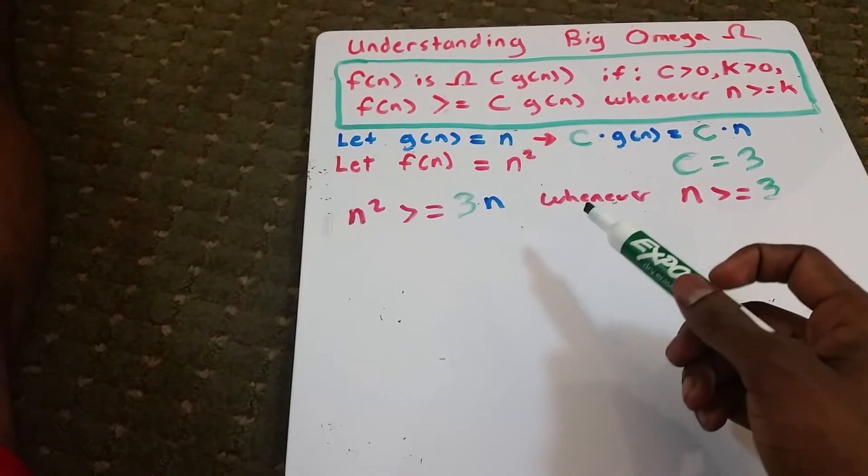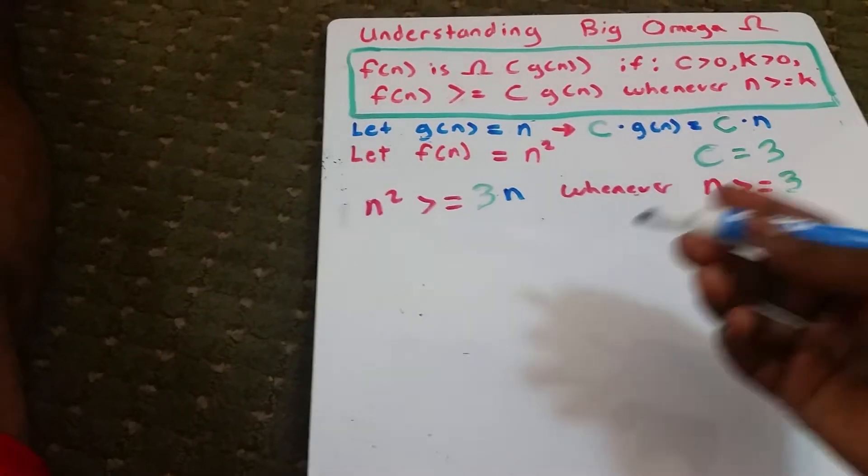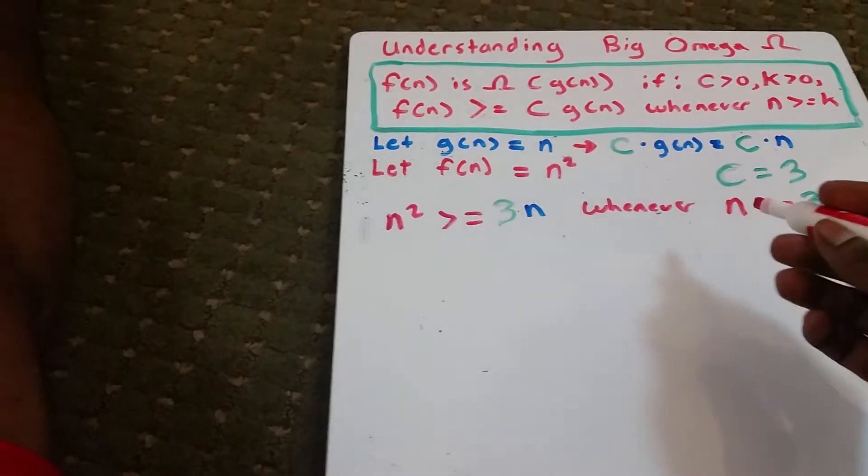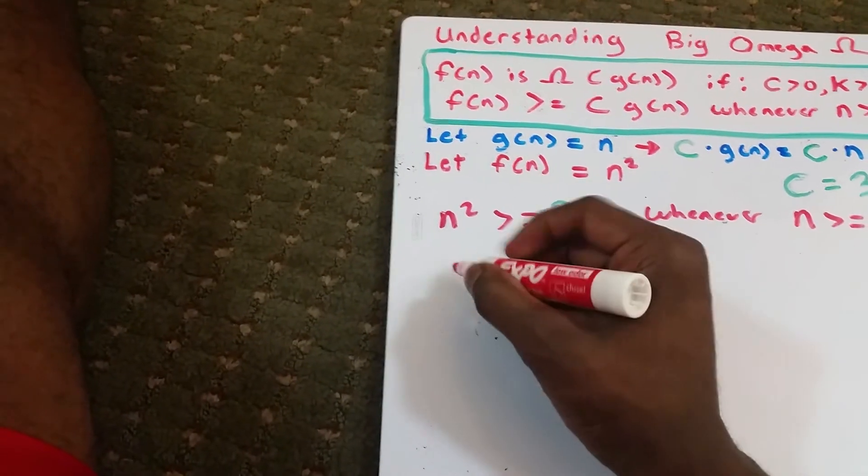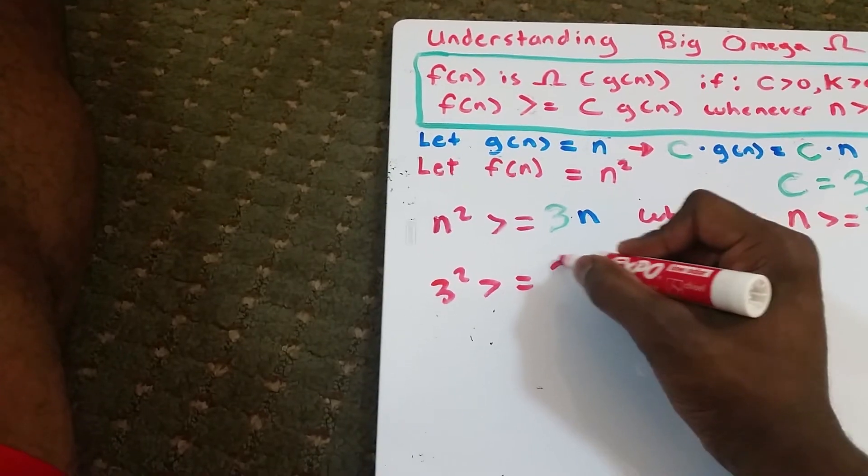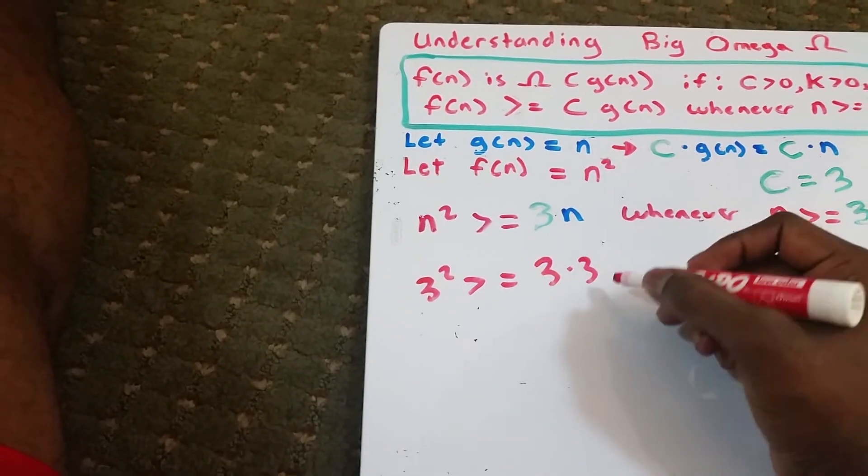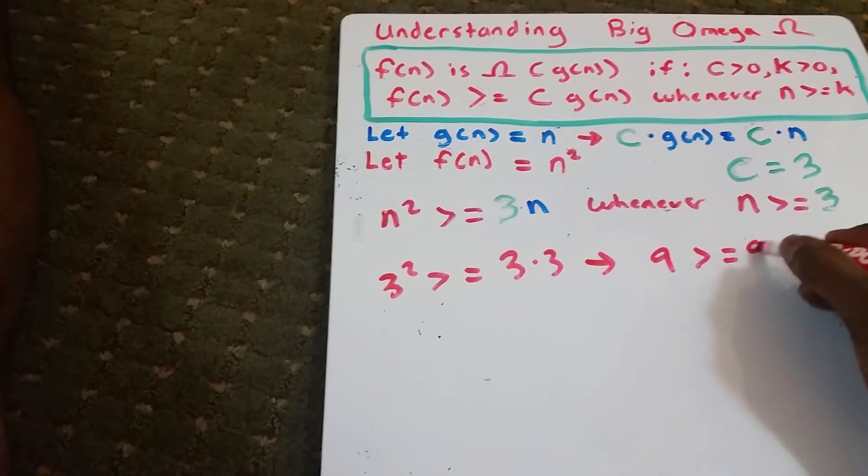So let's rewrite this. We have f of n, that's n squared, is greater than or equal to some constant. We said our constant was 3, and that's what c is, times our g of n. Our g of n is n, whenever n is greater than or equal to k. And remember, we said our k was also 3, that's where the equations were equal. And is this true? The answer is yes. So let's go ahead and put in some values here. We say n is greater than or equal to 3, so let's put in 3 here for n. We get 3 squared is greater than or equal to 3 times 3, because we put in 3 for n. And that's true. That implies that we get 9 is greater than or equal to 9.